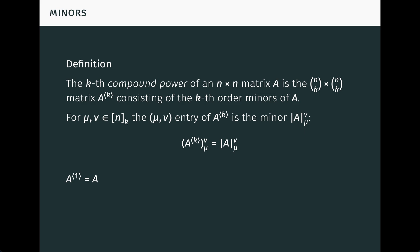As a simple example, notice that the first compound power of A is just A itself, because the 1 by 1 minors of A are just the entries of A. At the other extreme, the nth compound power of A is the 1 by 1 matrix whose single entry is the determinant of A. In particular, this means the determinant of A is just the trace of the nth compound power of A, a fact we'll make good use of later. Compound powers allow us to elegantly express many facts about matrices. Let's take a look.